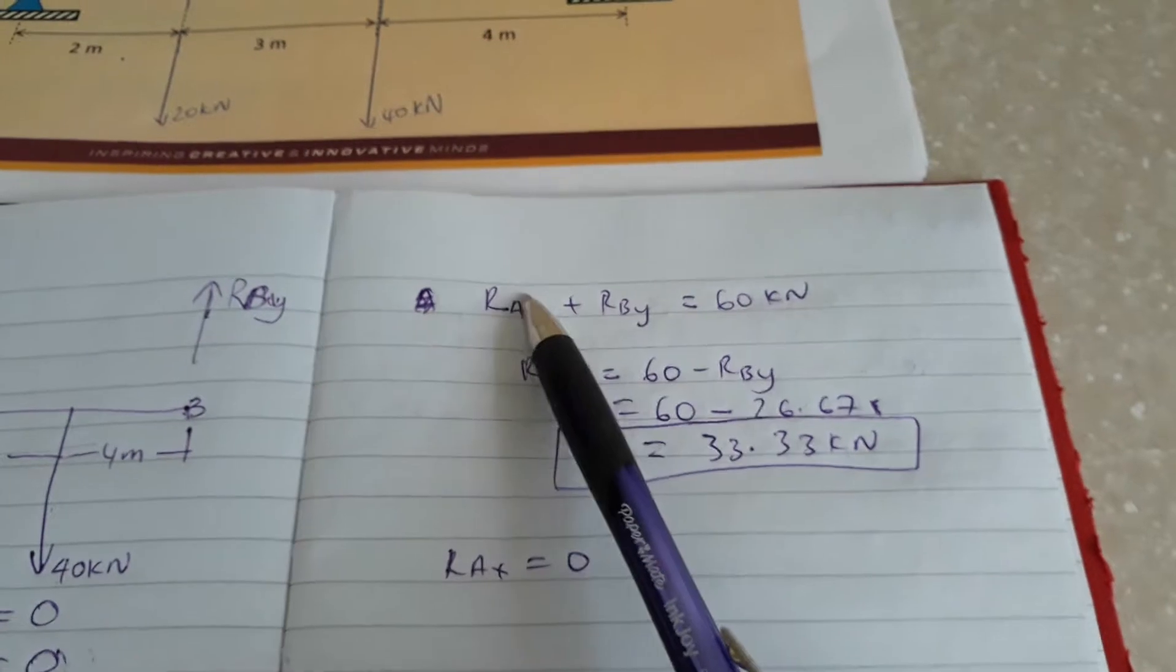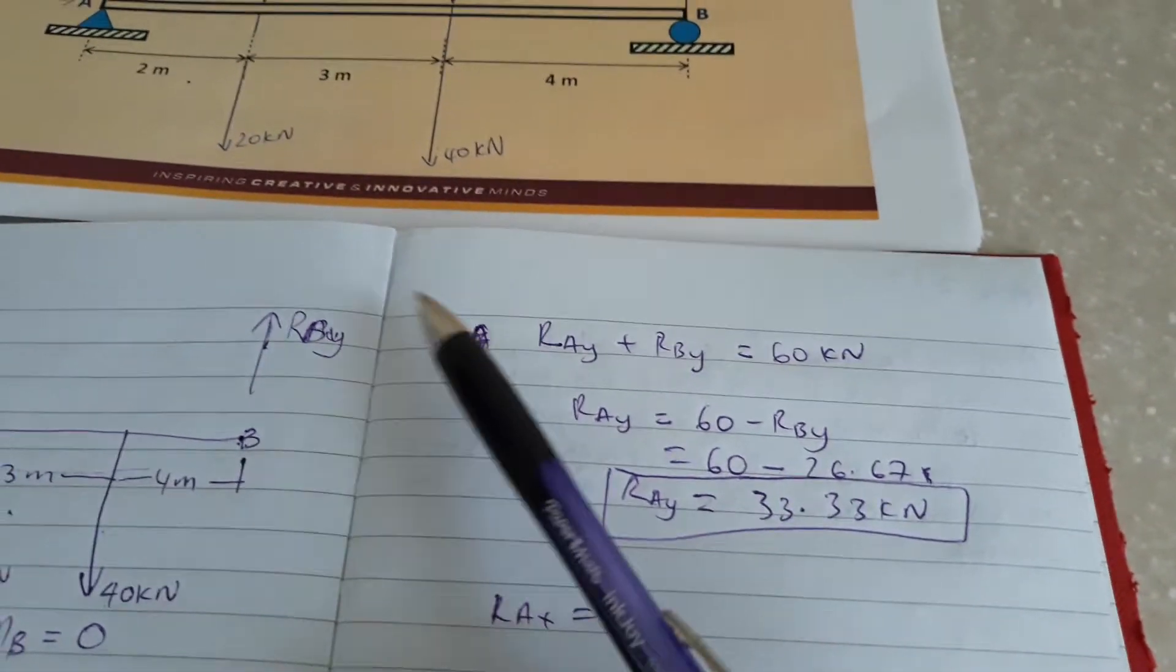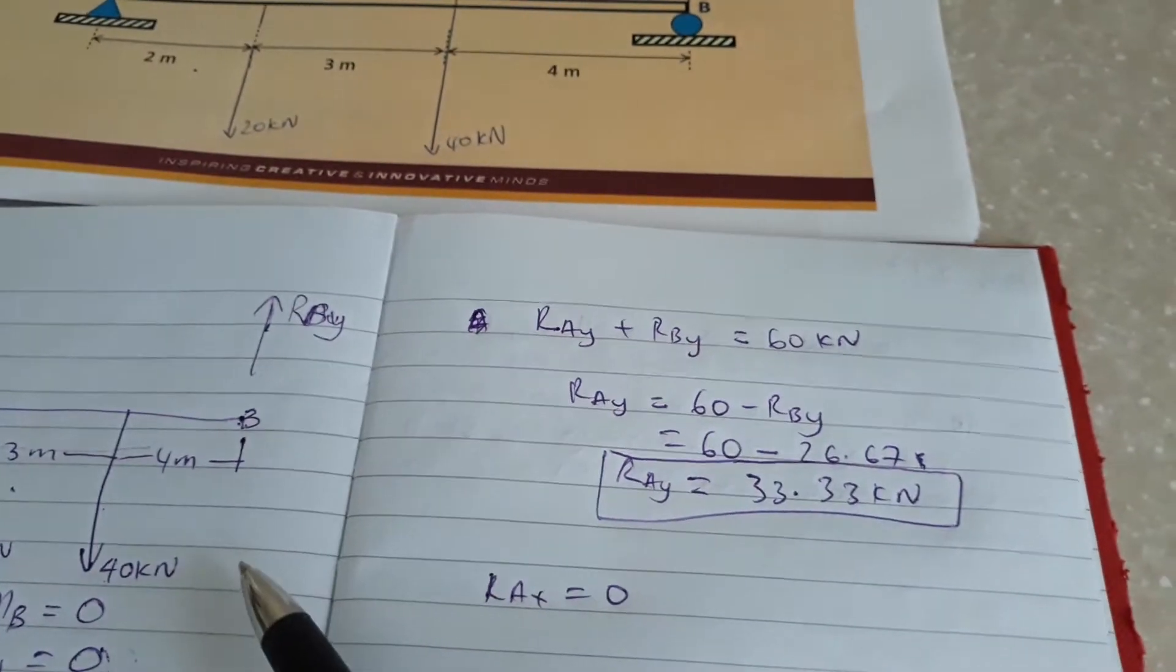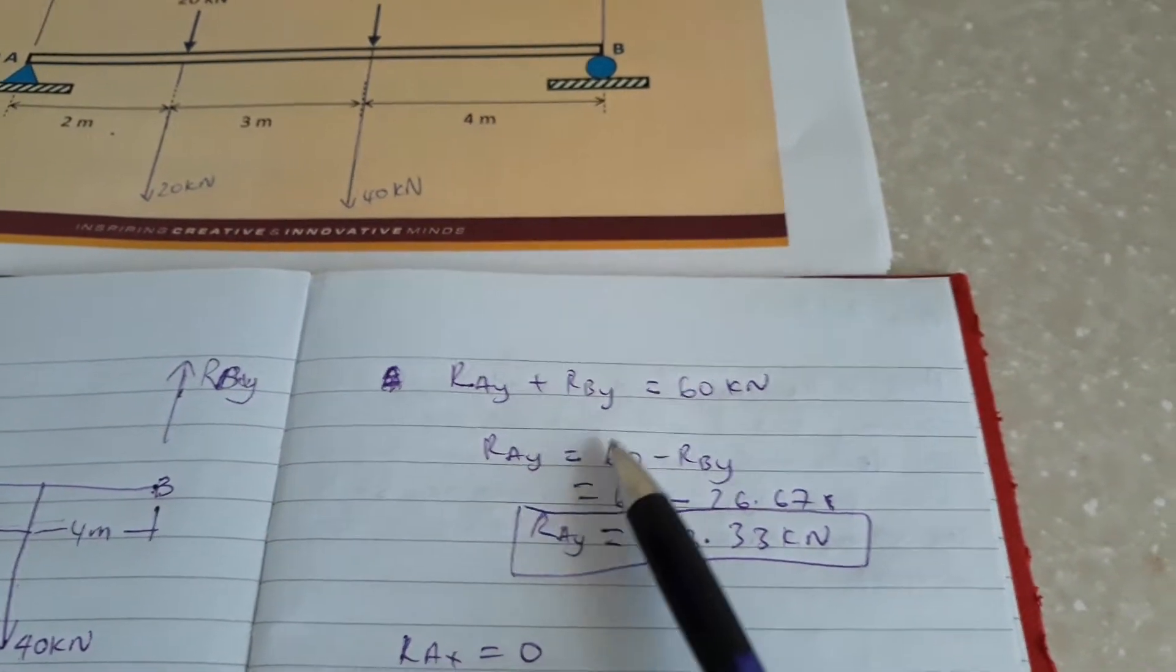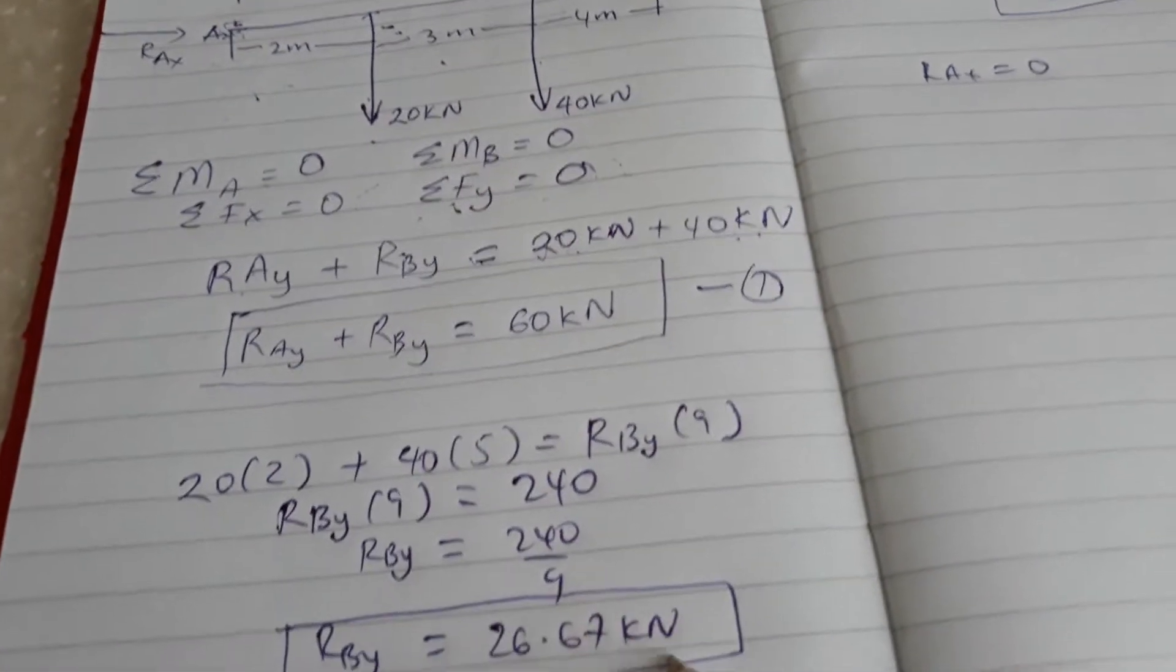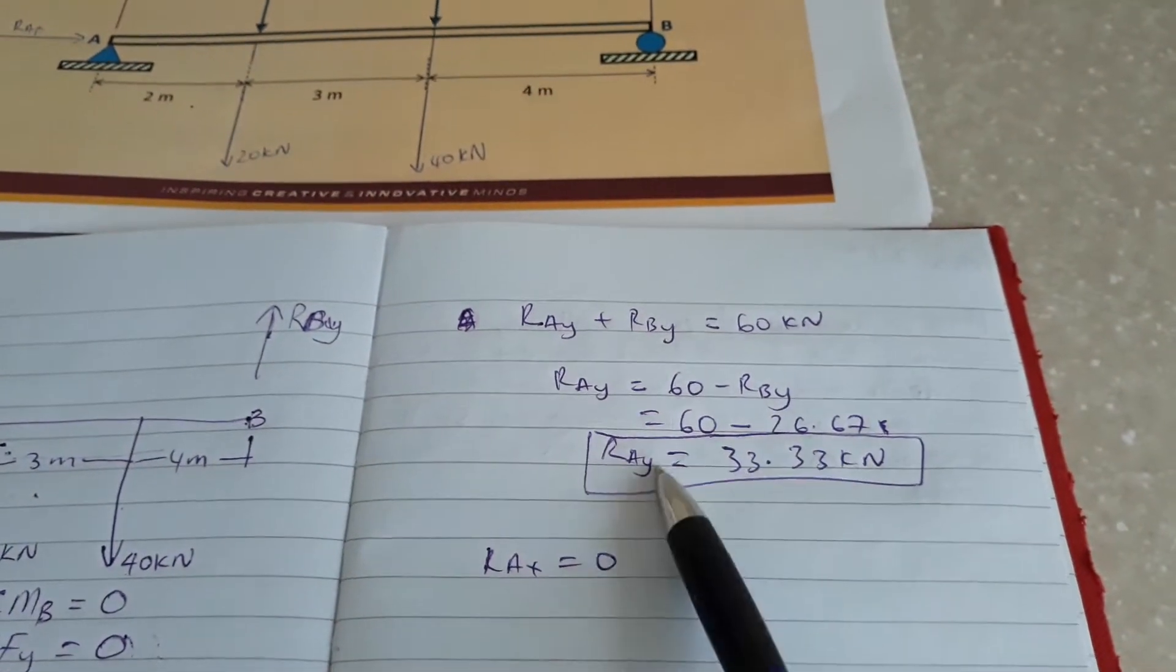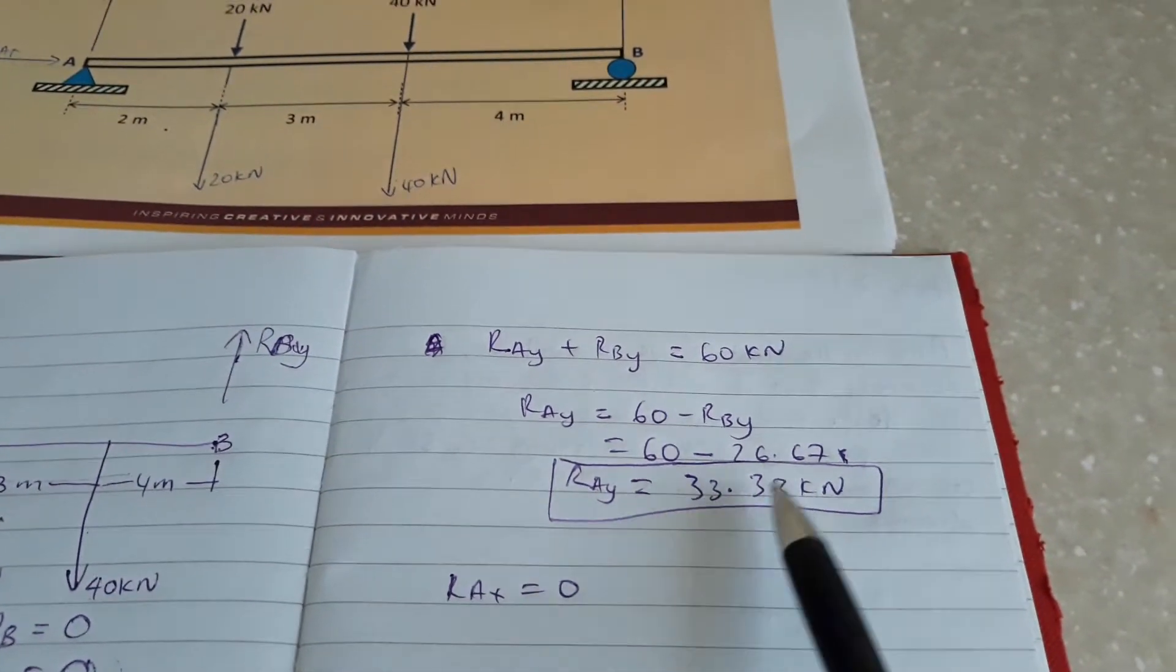We know RAy plus RBy equals 60 from sum of forces in y direction equals zero. So RAy equals 60 minus RBy. We've solved the reaction for B in the y direction as 26.67, so once we take that out we get 33.33 kN.